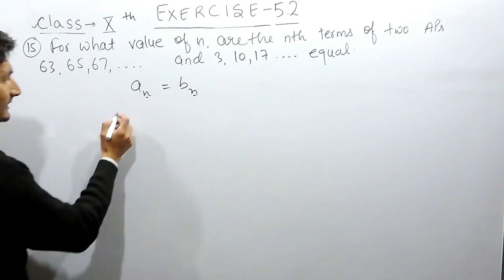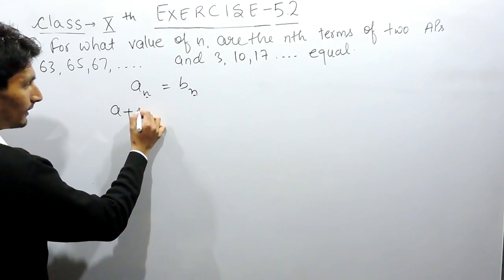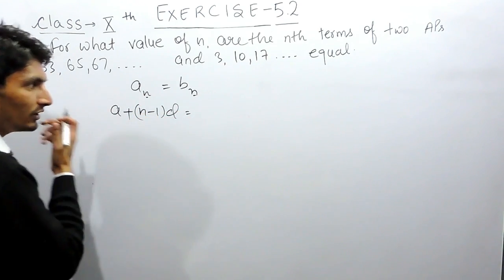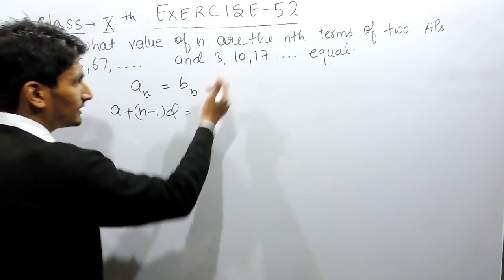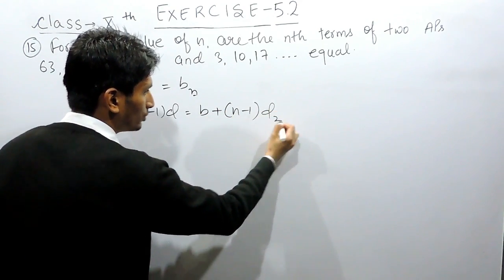For this the nth term will be the first term plus n minus 1 into d. This is the formula we know and for this the nth term will be b plus n minus 1 into d2.